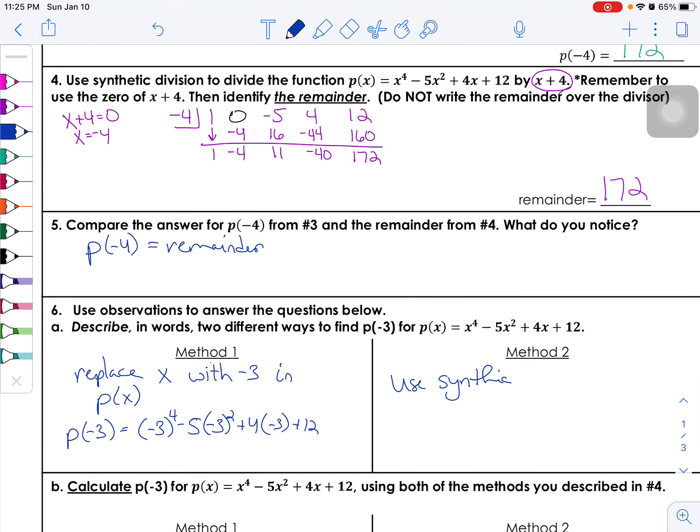Or use synthetic division to divide p(x) by negative 3, or using negative 3. And then the answer is the remainder. Okay.